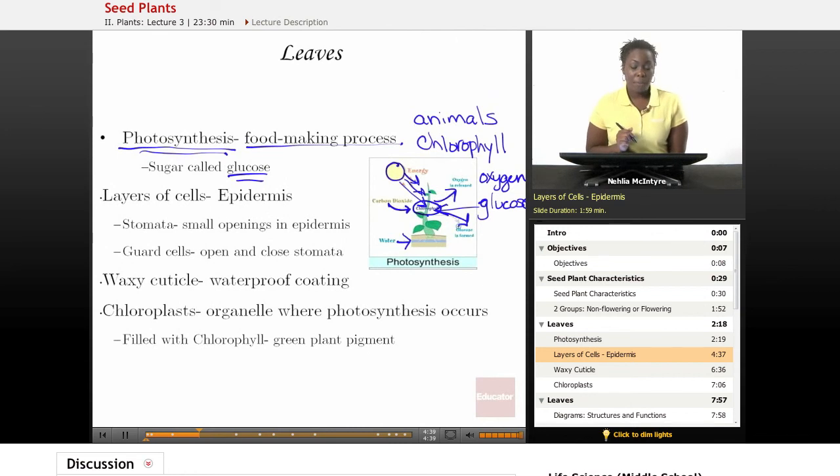Leaves have a special structure to help them perform their functions. Leaves are made of several layers of cells that come together. The very top layer of the leaf and the very bottom layer are identified as the epidermis of the leaf.